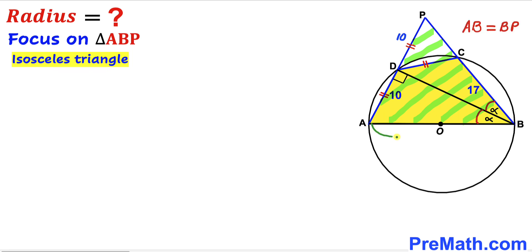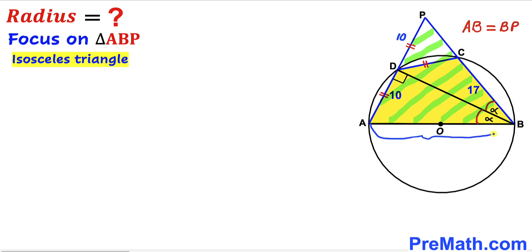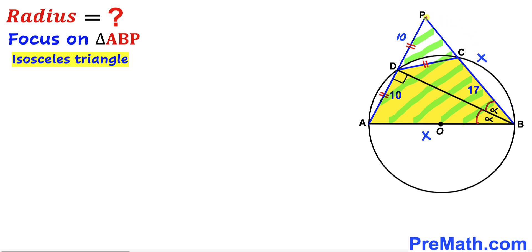Since triangle ABP is isosceles, diameter AB equals side BP. We label the diameter AB as X, so BP equals X as well. We know chord BC is 17, so segment PC equals X minus 17.